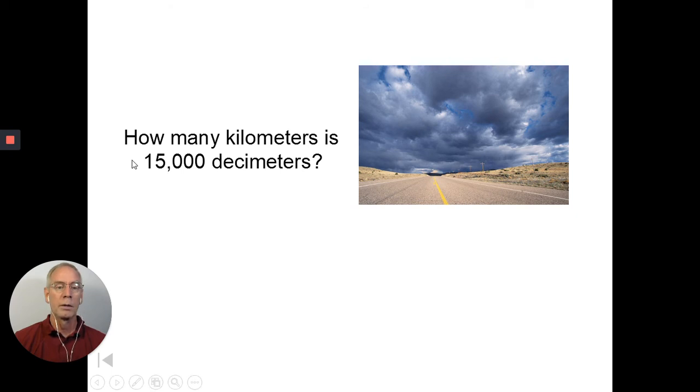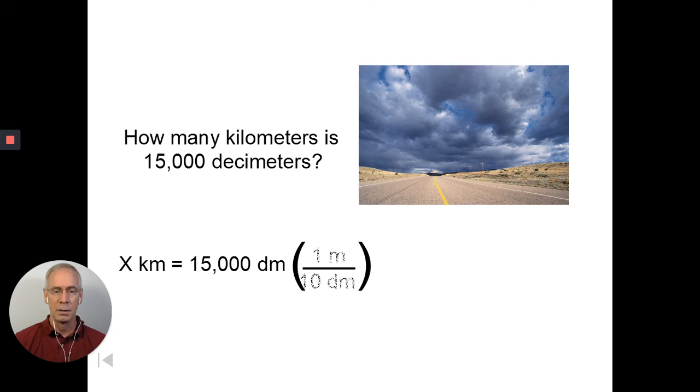What are we looking for? How many kilometers is 15,000 decimeters? Off the top of my head, I couldn't tell you the conversion between decimeters and kilometers, and I doubt you could either. But what we do know is this: there are 1,000 meters in a kilometer, and there's also 10 decimeters in a meter. So, my first conversion is going to say, in 1 meter, there are 10 decimeters. Notice that the unit decimeter cancels.